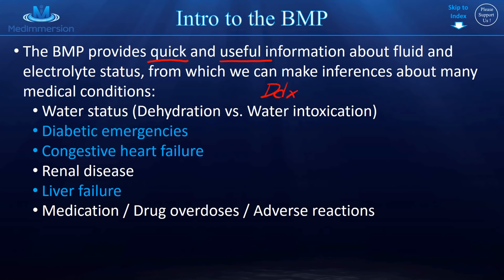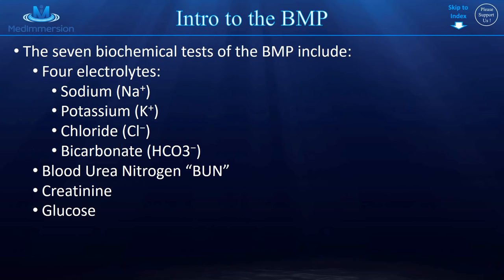It's kind of like the initial test, and with the clinical picture it guides you in other directions. It gives you good information on water status, diabetes, congestive heart failure, renal disease, liver disease, and even medication or drug overdoses. In a standard BMP, there are seven tests. Four of those are electrolytes: sodium, potassium, chloride, and bicarbonate. The last three are not electrolytes, but are equally important.